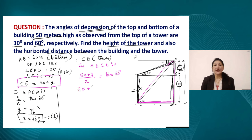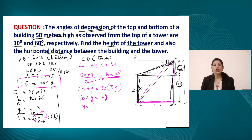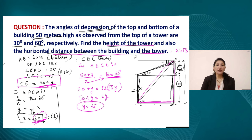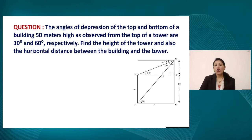On solving, 50 plus y equals root 3 times x, and substituting the relationship from the first triangle where x equals root 3 y, we get 50 plus y equals root 3 times root 3 y, which is 3y. Solving this equation gives y equals 25. Therefore x equals 25 root 3. The height of the tower is 50 plus y, which equals 50 plus 25 = 75 meters.